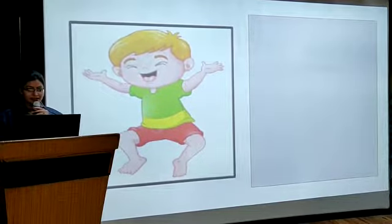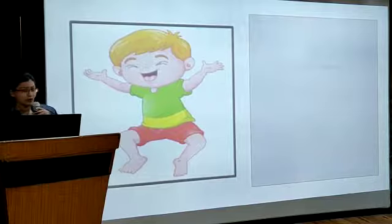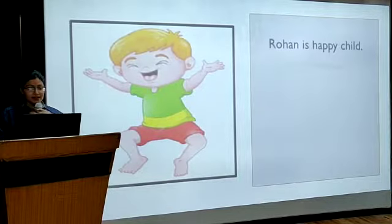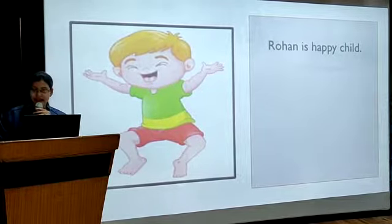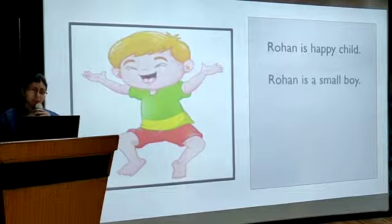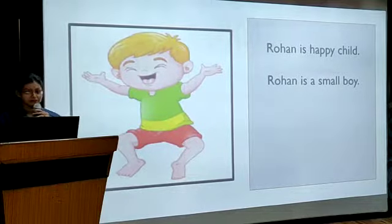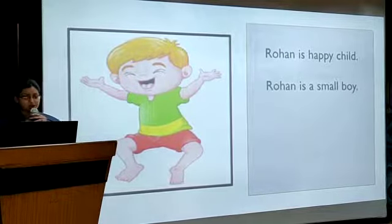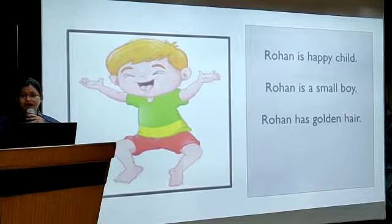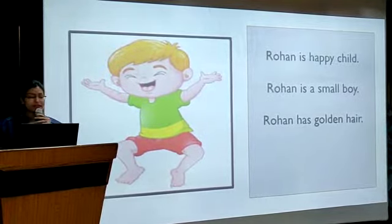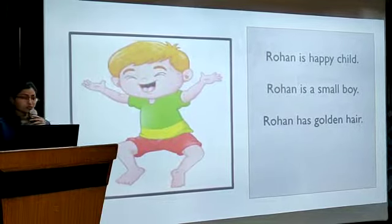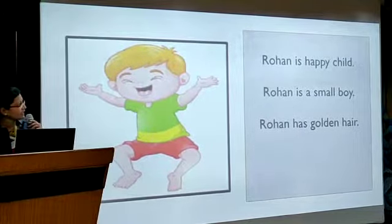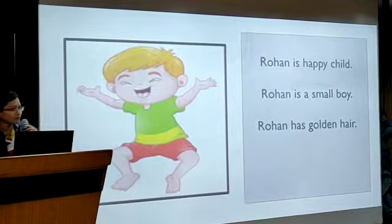Now please tell me. Rohan is a happy child — great. Rohan is a small boy — very good. Oh wow, very good — Rohan has golden hair. And anybody else? So children, as you see, you told me these words like happy, small and golden.